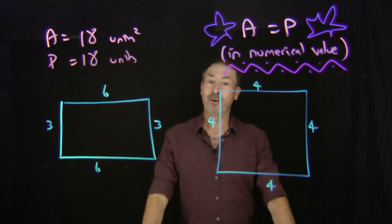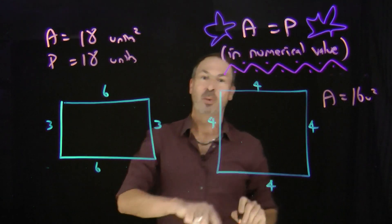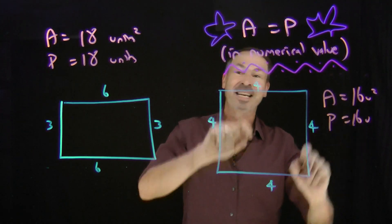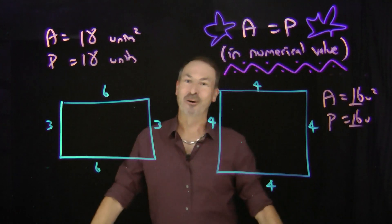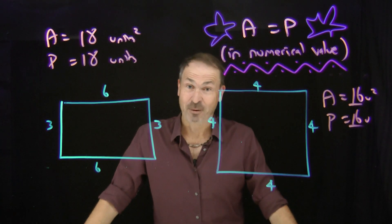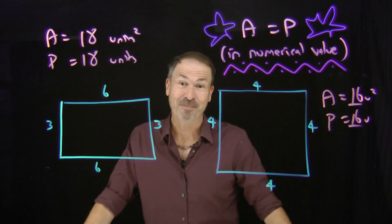The same is true for the 4×4 square. The area here is 4 times 4, 16 units squared, and its perimeter is 4 plus 4 plus 4 plus 4, 16 units. The same numerical value. Wow! So I wonder if there are any other rectangles with integer side lengths with area equal to perimeter, at least in numerical value. Can you find another one?